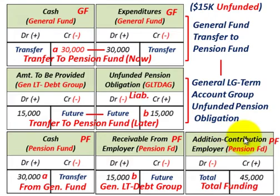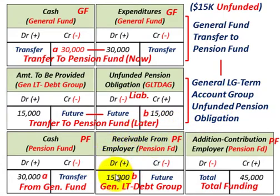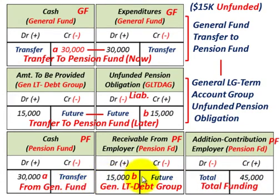The additions represent the total funding: what we receive now and what we're going to get in the future. Remember, rather than revenues, when you're talking about the pension fund, use the terminology 'additions,' and title it 'contributions from employer.' We take whatever cash we're getting now — transferred from the general fund into the pension fund — and any future transfers represent the unfunded pension obligation, going through the general long-term debt account group. Recognize the total additions for the actuarial requirement.